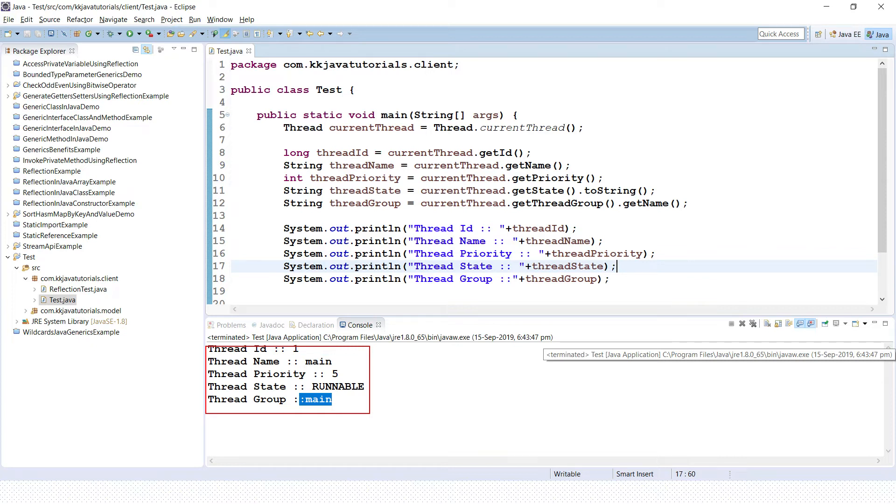And finally, this thread, the main thread, belongs to the group name called main itself. If you create any thread, your custom thread, using Thread class or Runnable interface or in other ways, then easily you can retrieve this information.